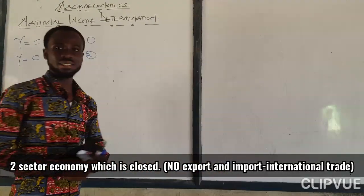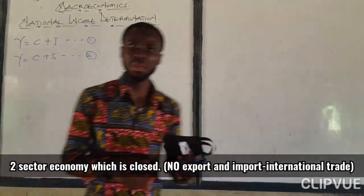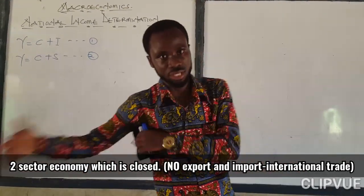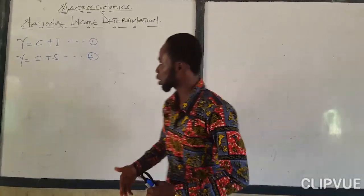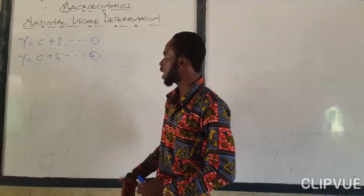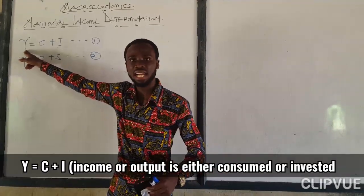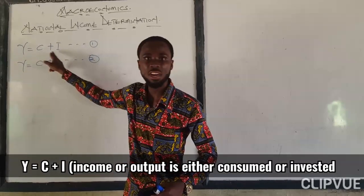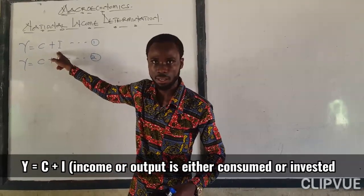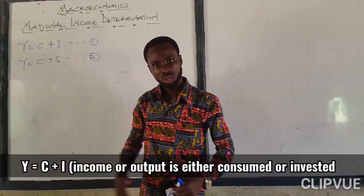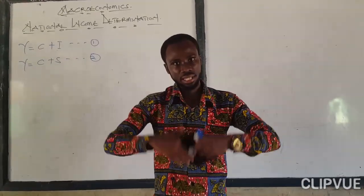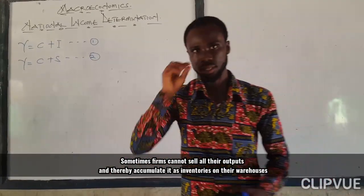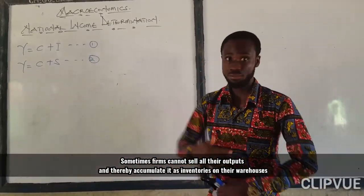Under the two-sector economy, we are saying that the economy is closed. We are going to focus on the closed economy. Under the closed economy, we are saying that outputs of production or income is either consumed or invested. If I have an income, it's either I consume it or I invest it.